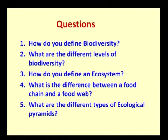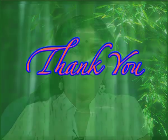To summarize, we have looked at the concept of biodiversity — what it means, its definitions, types and levels — along with the concepts of ecosystem, food chain, food web, and ecological pyramids, including what happens to numbers, biomass and energy levels. Review questions: How do you define biodiversity? What are the different levels of biodiversity? How do you define an ecosystem? What is the difference between a food chain and a food web? What are the different types of ecological pyramids? This concludes our session on biodiversity, and we will look at the other portions during the next few sessions. Thank you.